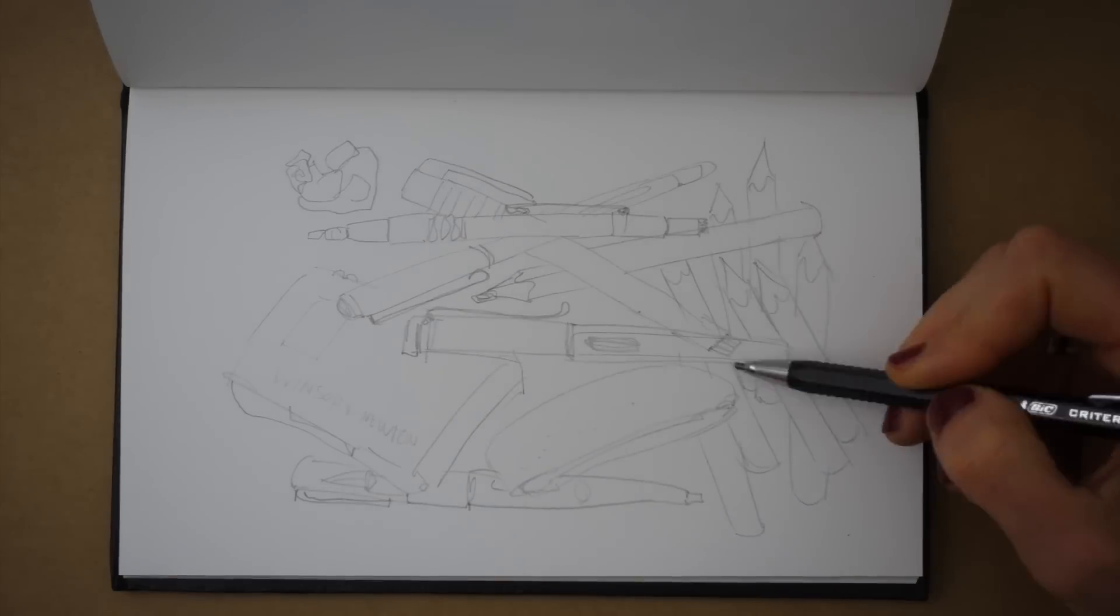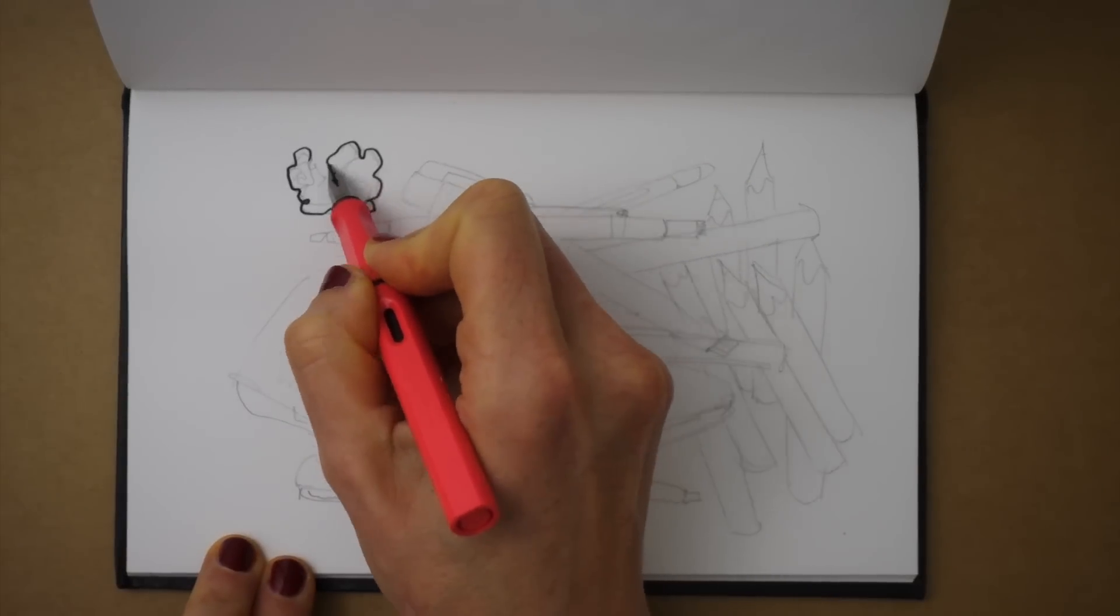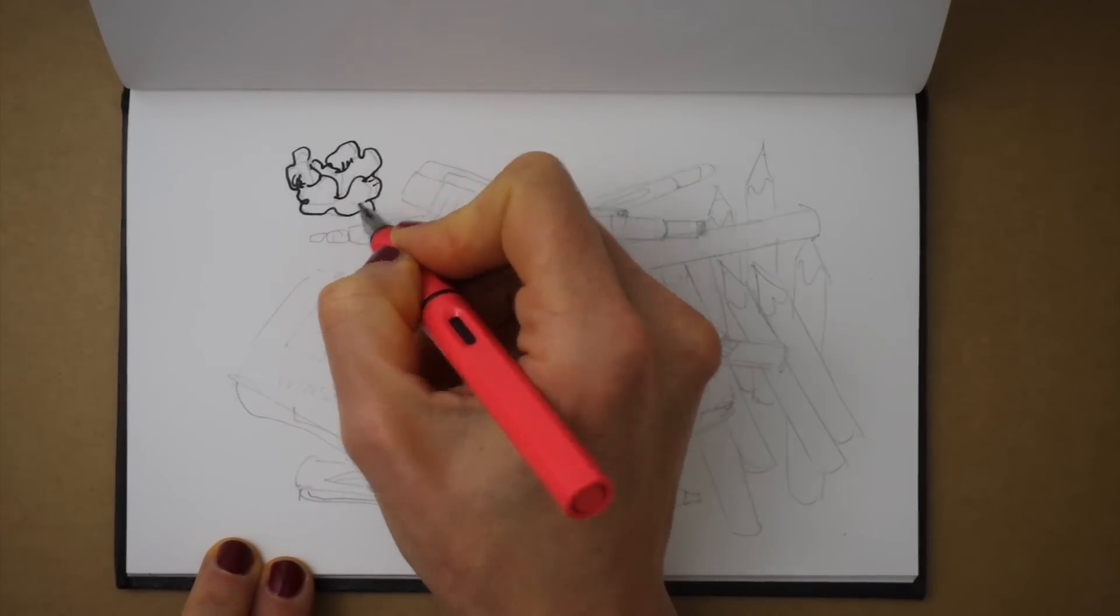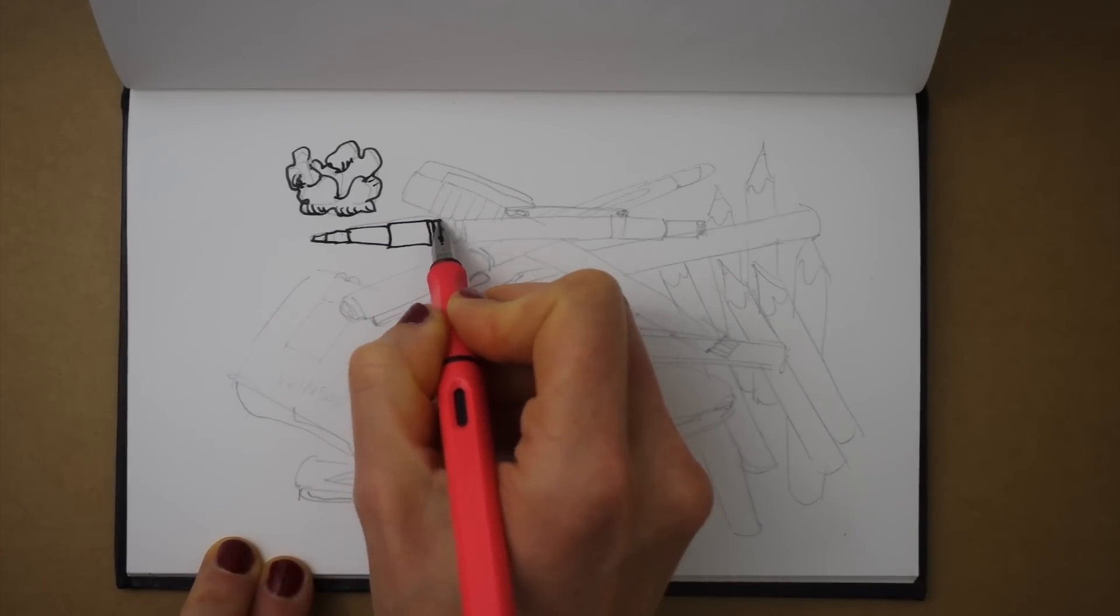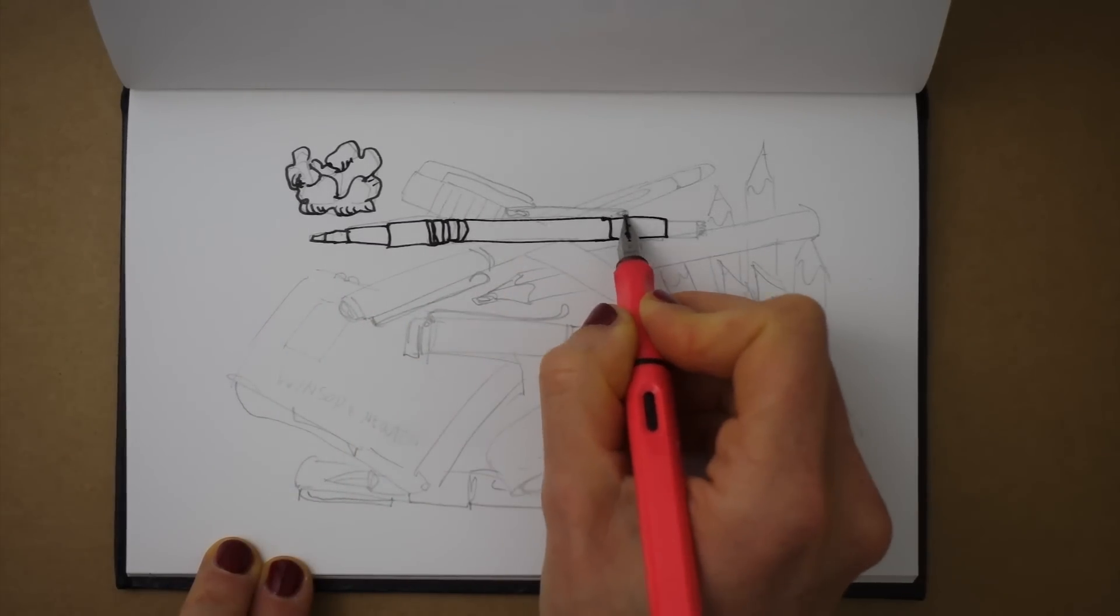Then I trace the outlines with my fountain pen. It has waterproof ink in it, so I don't need to worry about my ink bleeding when I want to color my page using watercolors.